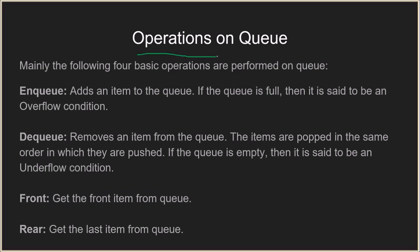So what are the operations on the queue? Mainly the following four operations are performed: enqueue, dequeue, front, and rear. Enqueue is basically adding an item to the queue. What it does is check if the queue is full or not, and if the queue is full then it is said to be an overflow condition — you cannot add more elements to it because it is already full.